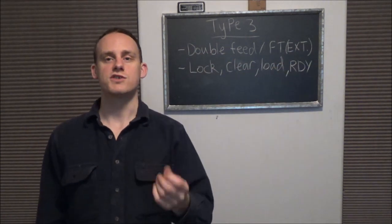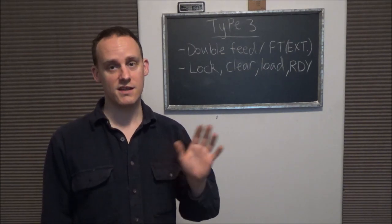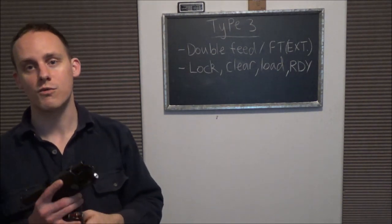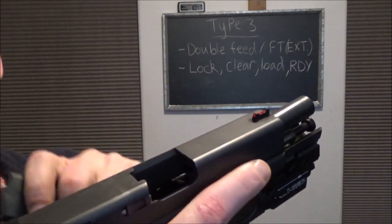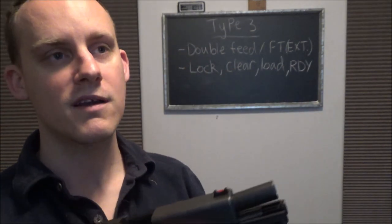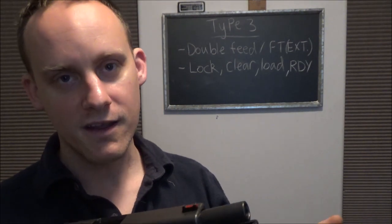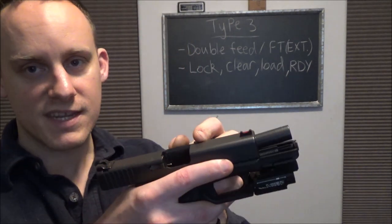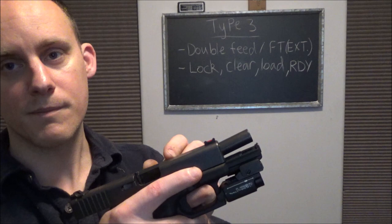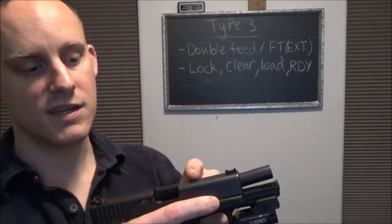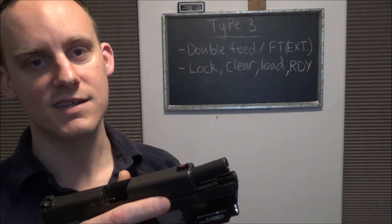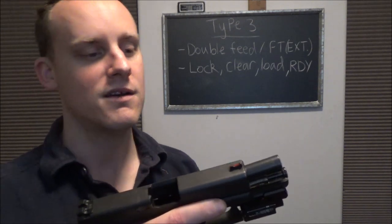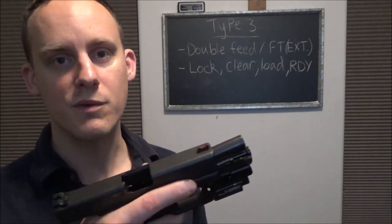But then you also have failures to extract, which is the most common one. What that is, is you have a round that has fired and it is stuck in the chamber and somehow it let the slide go back either a little bit or all the way and try to pick up the next round in some form or fashion. Sometimes the brass can stick out a little bit or it can stick out a good amount. It can be very common with pretty much any firearm. It's the most common Type 3 that you're going to find.